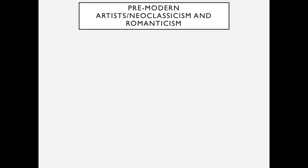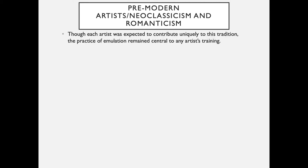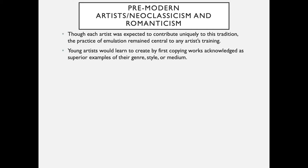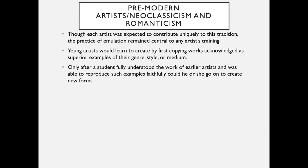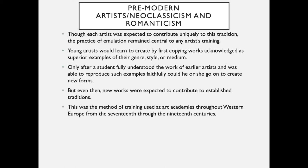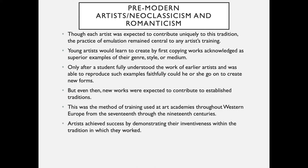Pre-modern artists were looking at neoclassicism and romanticism. Though each artist was expected to contribute uniquely to a long tradition going back to ancient Greece, the practice of emulation remained central to any artist's training. Young artists would learn to create by first copying works acknowledged as superior examples of their genre, style, or medium. Only after fully understanding earlier artists could they go on to create new forms, though new works were still expected to contribute to established traditions. This method was used at art academies throughout Western Europe from the 17th through the 19th centuries.